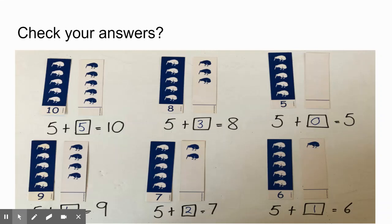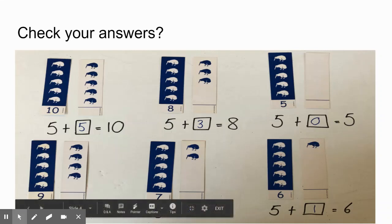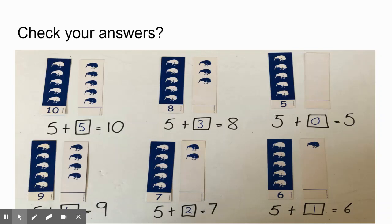5 plus 0 equals 5. 5 plus 4 equals 9. 5 and 2 more would be 7. And 5 and 1 more equals 6. Did you agree with Mrs. Lyon? I hope so.